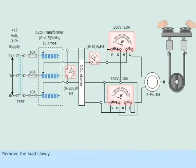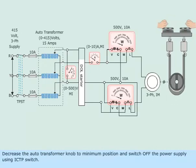Remove the load slowly. Decrease the auto transformer knob to minimum position and switch off the power supply using ICTP switch.